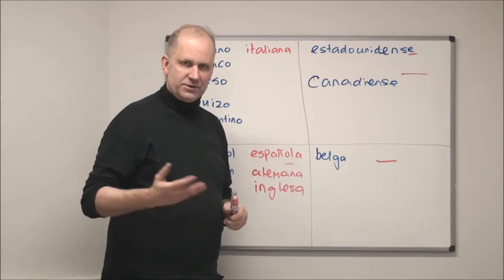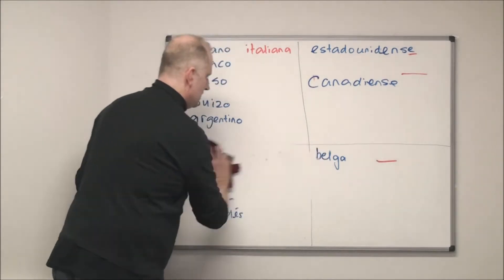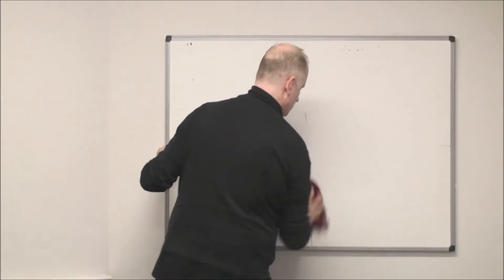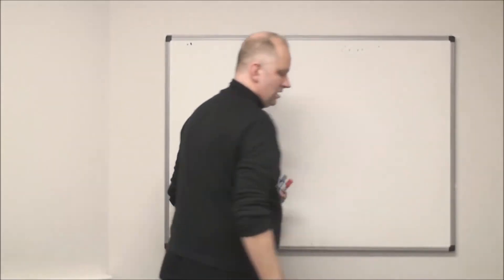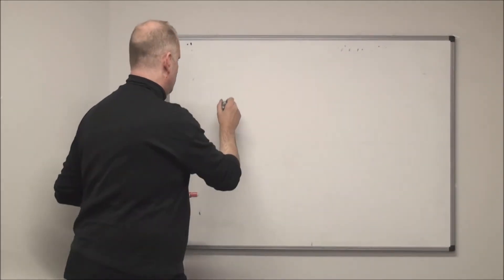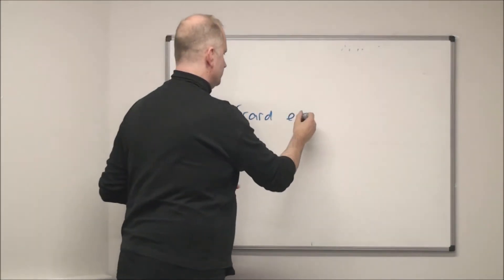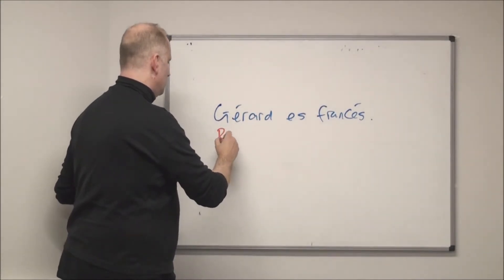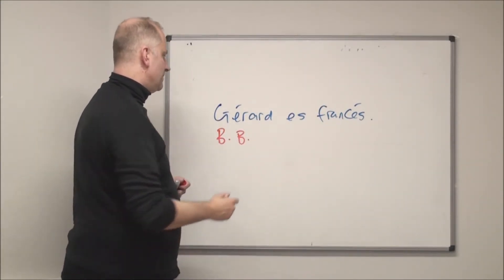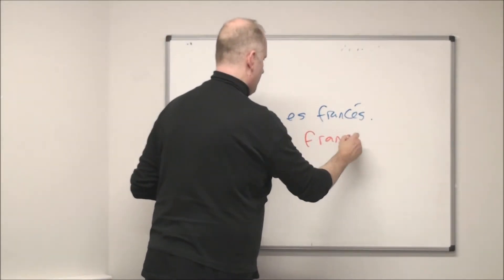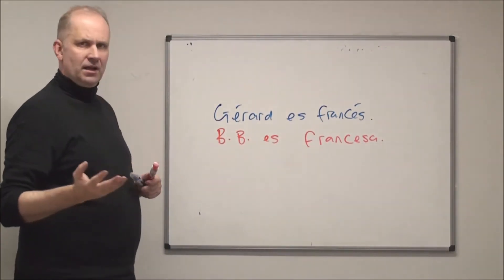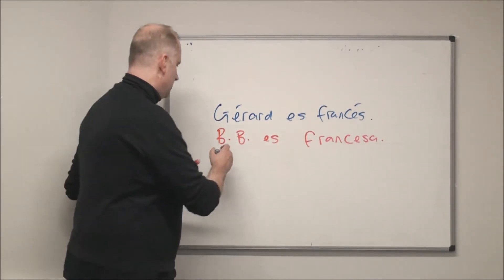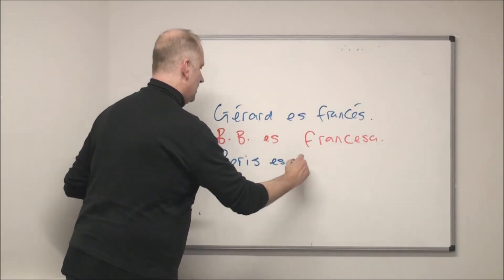Now let's think of some famous people and their nationalities. Gérard Depardieu is French — 'Brigitte Bardot es francesa'. Boris Becker is German — 'Boris es alemán'.